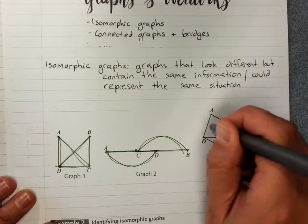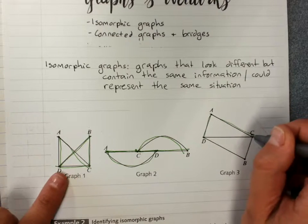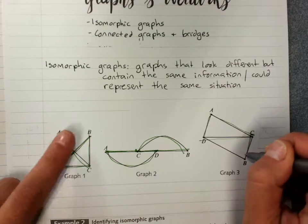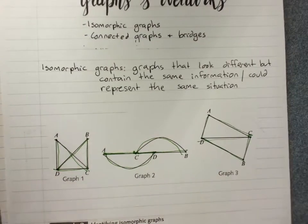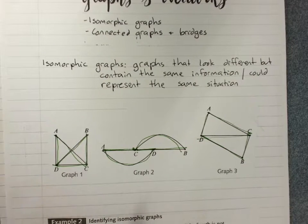A is connected to D and C. C is also connected to D and B. D and B are also connected. They're the same. Functionally, there's no difference between these graphs.